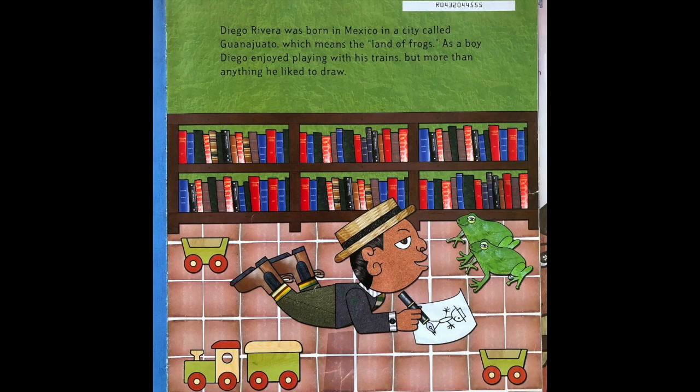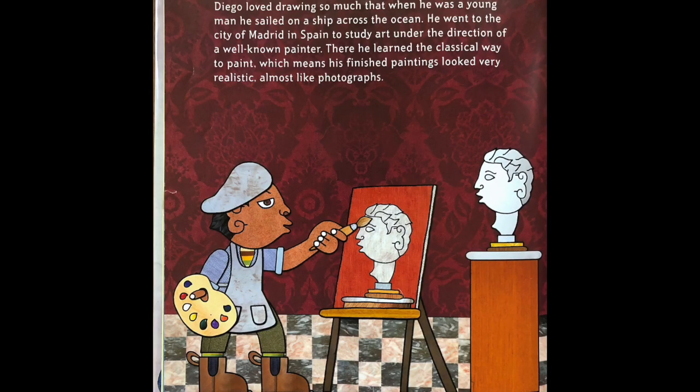Diego Rivera was born in Mexico in a city called Guanajuato, which means the land of frogs. As a boy, Diego enjoyed playing with his trains, but more than anything else, he liked to draw. Diego loved drawing so much that when he was a young man, he sailed on a ship across the ocean. He went to the city of Madrid in Spain to study art under the direction of a well-known painter. There he learned the classical way to paint, which means his finished paintings looked very realistic, almost like photographs.